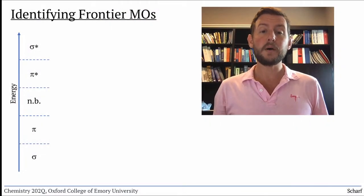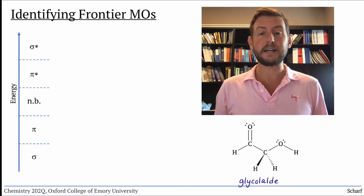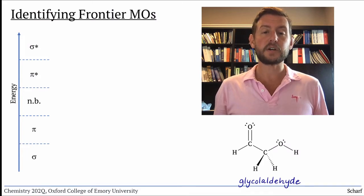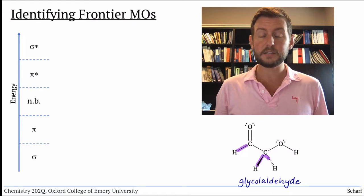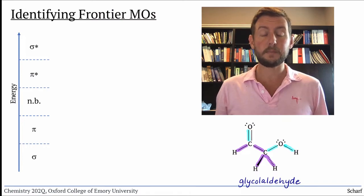Let's figure out what the HOMO and LUMO of the following molecule, glycolaldehyde, are. From the Lewis structure, we know that there are three CH-sigma bonds, one CC-sigma bond, two CO-sigma bonds, and one OH-sigma bond.